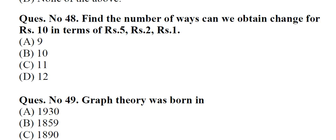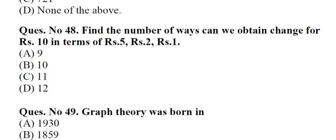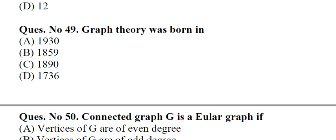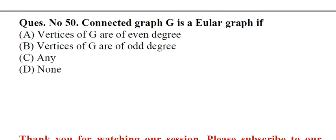Question number 48: Find the number of ways can we obtain change for 10 rupees in terms of 5 rupees, 2 rupees, 1 rupees. A. 9, B. 10, C. 11, D. 12. Answer: B, 10. Question number 49: Graph theory was born in A. 1930, B. 1859, C. 1890, D. 1736. Answer: D, 1736.